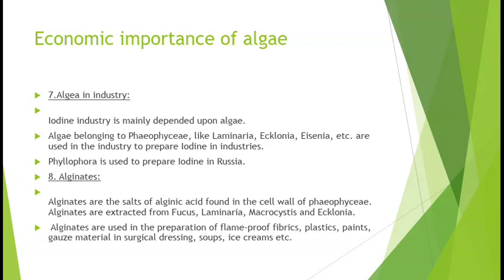7th point: Algae in Industry. Iodine industry is mainly dependent upon algae. Algae belonging to Phaeophyceae like Laminaria, Ecklonia, Eisenia etc. are used in the industry to prepare iodine.